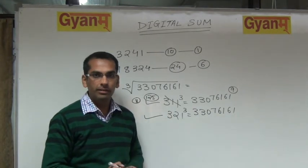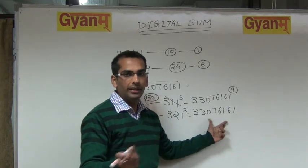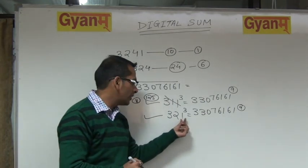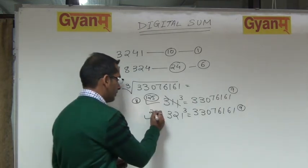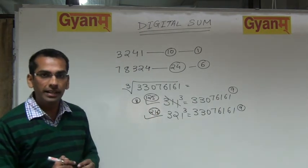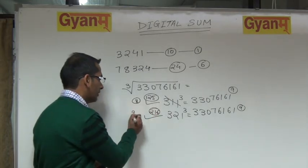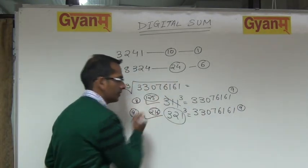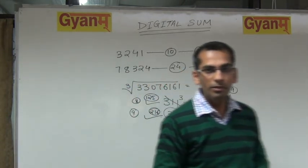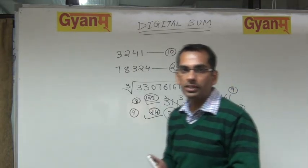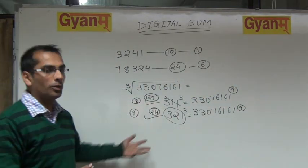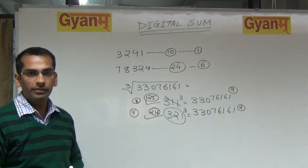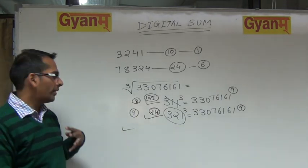Let us verify for 321. For the right-hand side we need not calculate again — the digital sum is still 9. For 321: 3 plus 2 is 5, 5 plus 1 is 6. What is the cube of 6? 216. It has not become a single digit yet. What is 2 plus 1? 3. 3 plus 6? 9. So the digital sum of 321 cubed is 9, which matches the right-hand side.